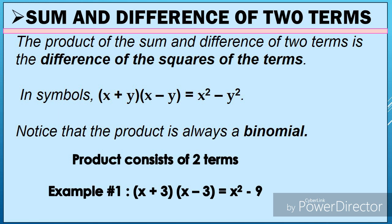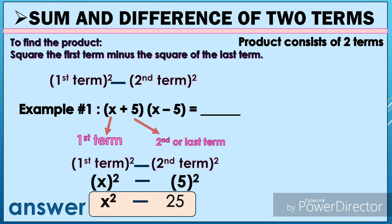Notice that the product is always a binomial. The product of sum and difference of two terms is always two terms. For example, the quantity of (x + 3) times the quantity of (x − 3) is equal to x² − 9. To find the product, there is a pattern to follow: we square the first term minus the square of the last term. In symbol: (first term)² − (second term)².